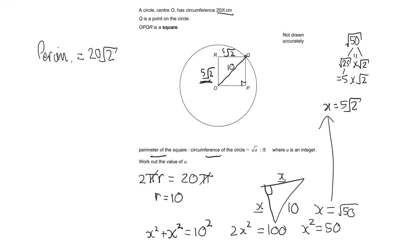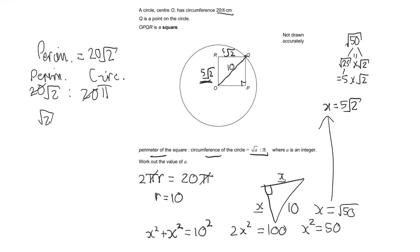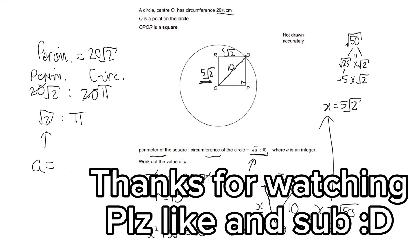We know the perimeter of the square to the circumference of the circle is given by √a to π. Writing this as a ratio: the perimeter is 20√2 and the circumference is 20π, giving us 20√2 to 20π. We can simplify by dividing both sides by 20, which gives √2 to π. This is exactly the form they're asking for, and a in this case is just equal to 2.